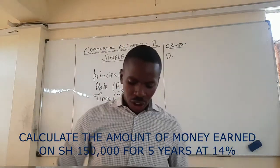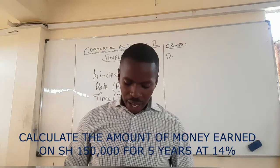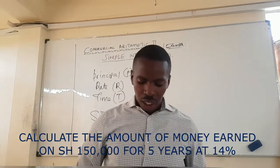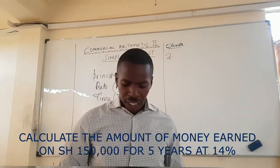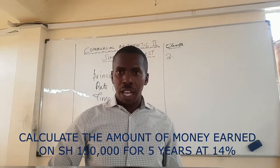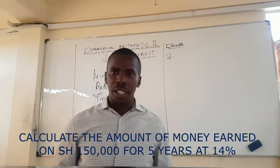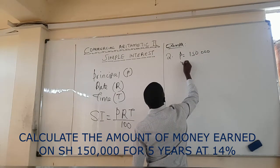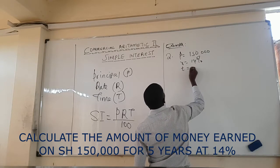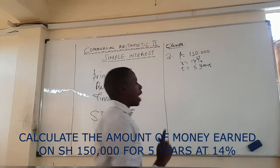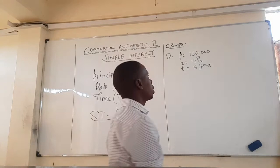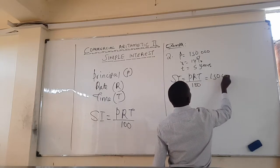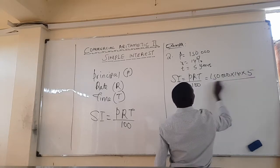Example 2: Calculate the amount of money earned on 150,000 shillings for five years at the rate of 14%. Here the principal is 150,000, the rate is 14%, and the time is five years. We are asked for the amount, so first we need the simple interest: SI = PRT over 100, which is 150,000 times 14 times 5, all over 100.